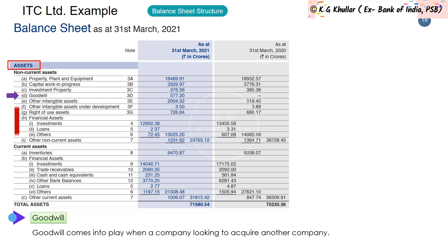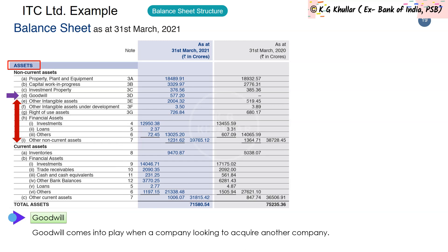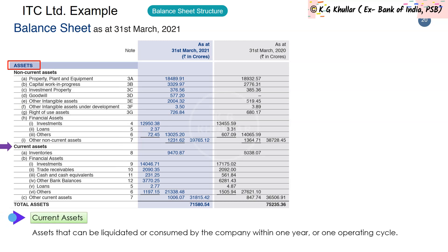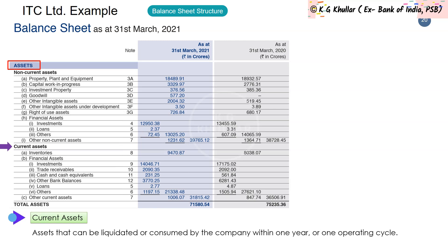The remaining non-current asset sub-heads are self-explanatory. Moving on, current assets are assets that can be liquidated or consumed by the company within one year or one operating cycle, whichever is less.